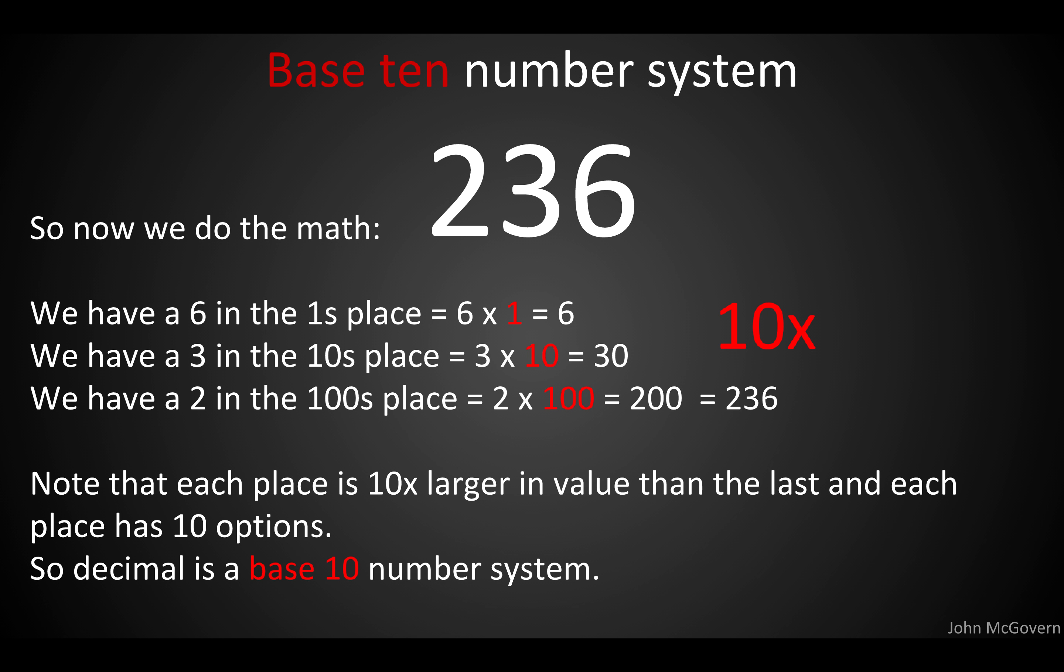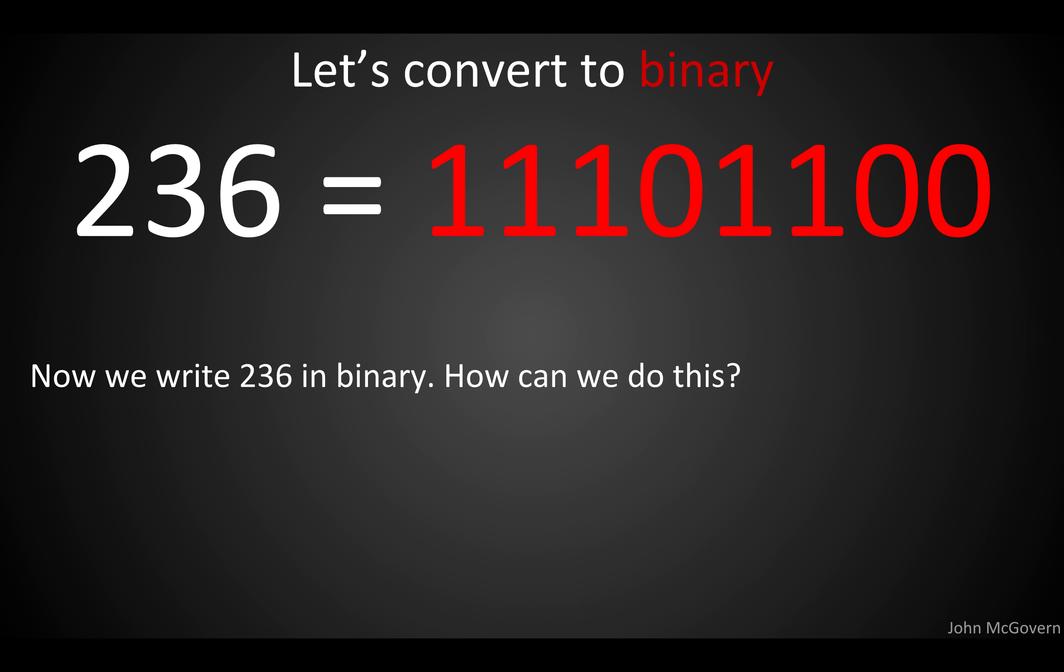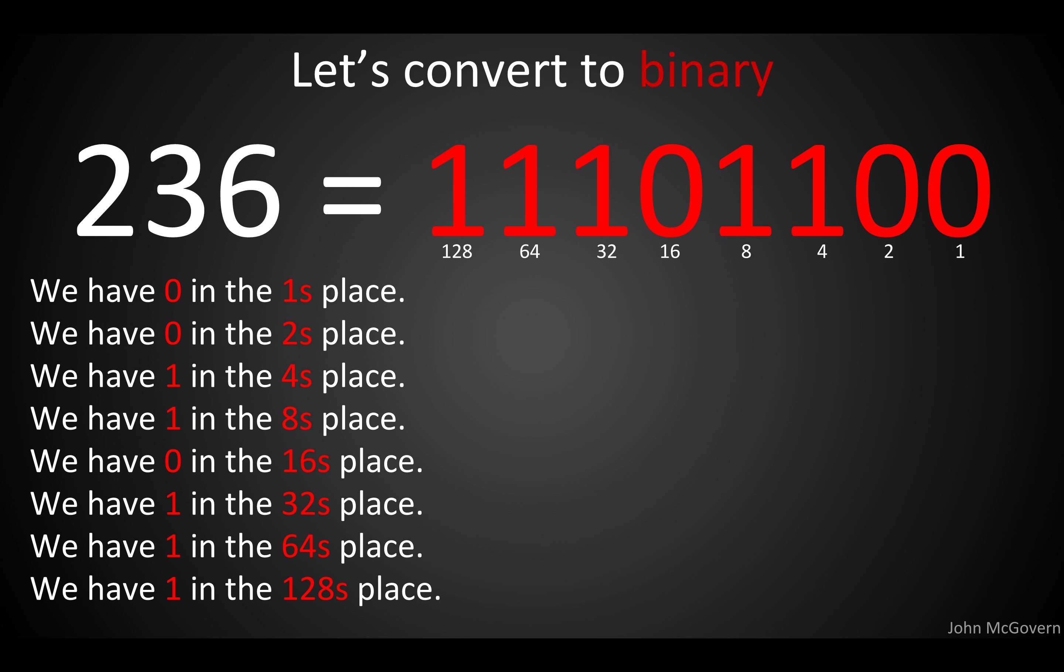Similarly, we are going to see base 2 numbering system and a base 16 numbering system. Let's talk about binary, bi or two. So let's convert the same number, 236, to binary. There it is, 11101100. But how did we do that? How did we convert? Well, let's take a look. We have a zero in the ones place. We have a zero in the twos place. But we have a one in the fours place, meaning we have one four, and a one in the eights place. We have one eight. No 16s, but 1 32, 1 64, and one 128.